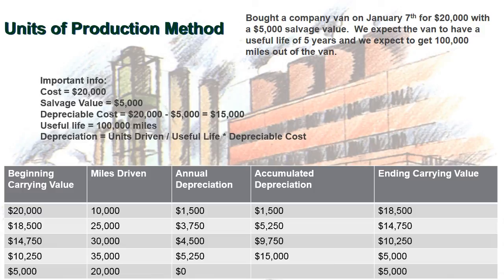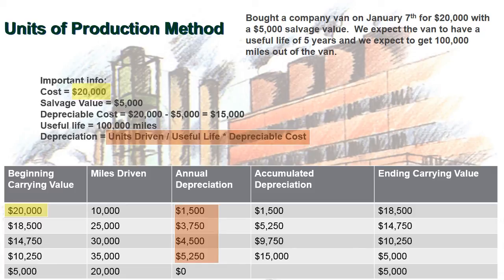In Year 1, we drove 10,000 miles. So 10,000 ÷ 100,000 = 10%, or 0.1. Multiply 0.1 × $15,000 = $1,500 annual depreciation. In Year 2, we drove 25,000 miles: 25,000 ÷ 100,000 = 0.25, then 0.25 × $15,000 = $3,750. The beginning carrying value remains $20,000 at the start, and each year's depreciation is calculated as units driven divided by 100,000 miles, multiplied by the depreciable cost of $15,000.